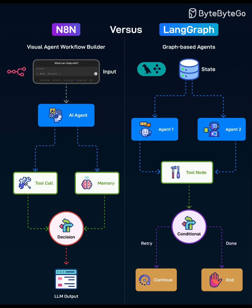Input, tools, memory, decisions, and output. N8N — Visual Agent Workflow Builder. N8N is about shipping fast with a canvas. Drop an AI agent node, connect data sources, add tool calls — APIs, webhooks, databases — and sprinkle in memory blocks for context. Each node encapsulates a step: retrieve data, call a function, format output, or store history. Decisions are made with simple condition nodes, so happy paths are easy to model with no custom orchestration code required. This shines for rapid prototyping and business automations that call few tools, integrations across SaaS APIs where N8N already has connectors, and teams who prefer visual debugging with node logs and retries.